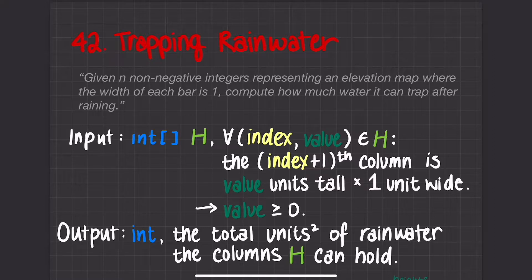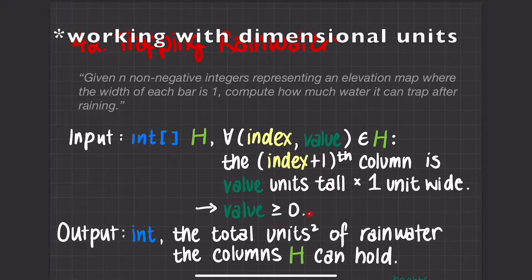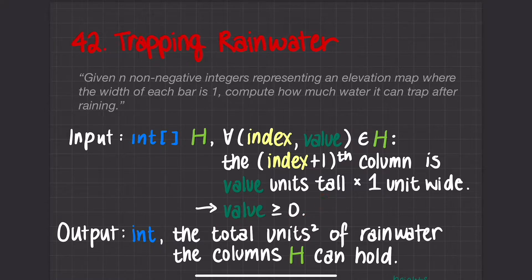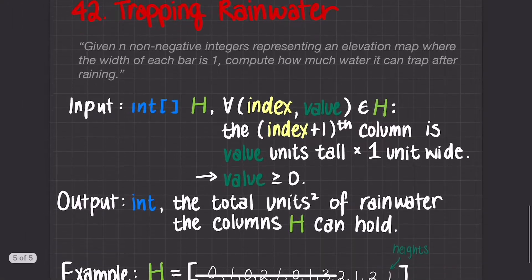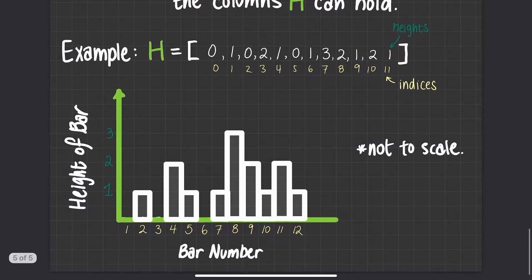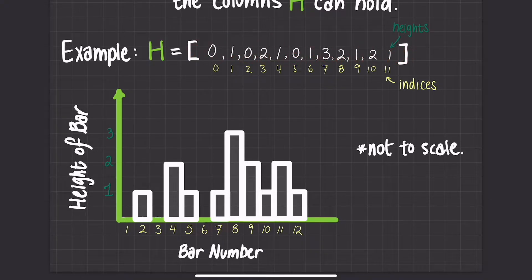And because we are working with units here, the value has to be non-negative because we're working with real numbers and real dimensions. The output is an integer — the question asks for the total units squared of rainwater that the columns h can hold. So let's go over an example to see exactly how this works. Here I've drawn up a graph according to the example given in LeetCode, example number 1.